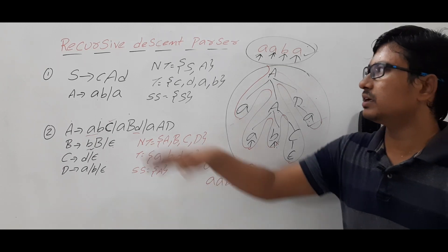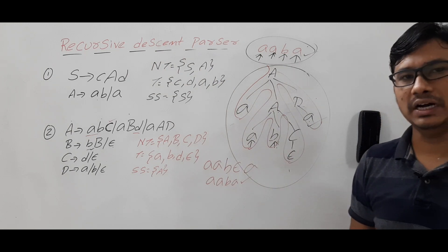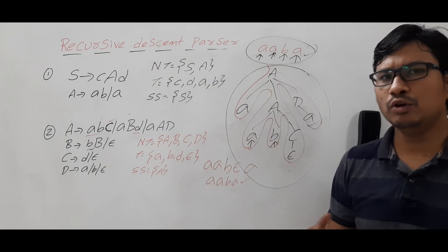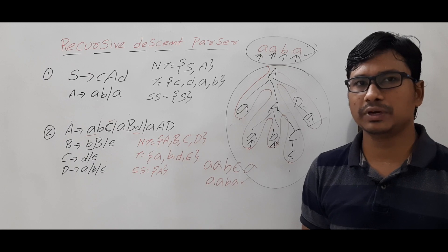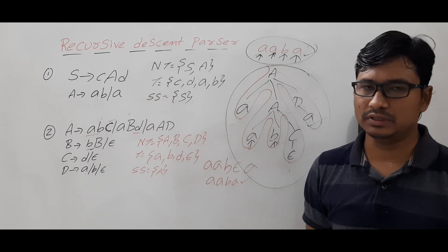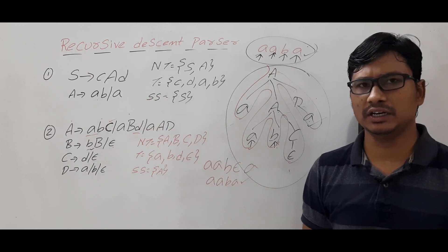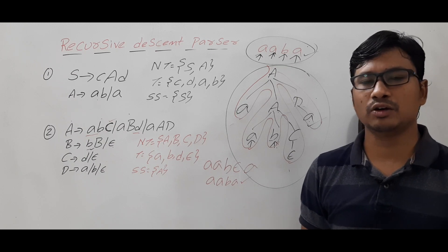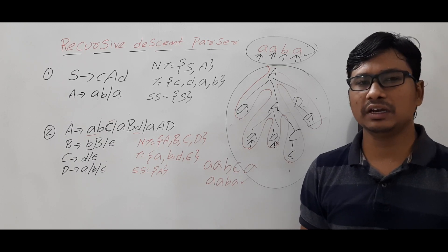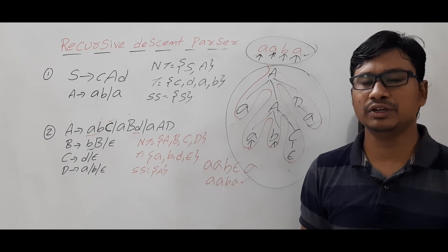This is how the recursive descent parser generates the parse tree. I hope you have understood the recursive descent parser with these two examples. If you still have any doubts related to this concept, feel free to ask me in the comment section. I will try to clear your doubts as early as possible. Thank you for watching my video, have a nice day.